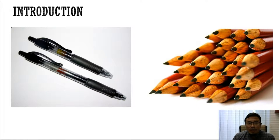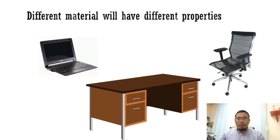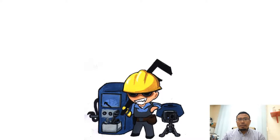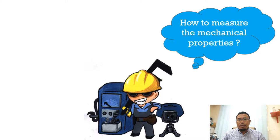Have you ever wondered why pencils or pens are never made from glass or rubber? Why are objects made from certain materials and not others? Different materials have different mechanical properties. Mechanical properties determine how a material will react when it is subjected to one or more mechanical constraints.